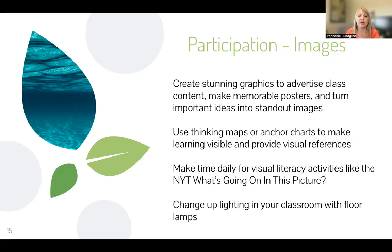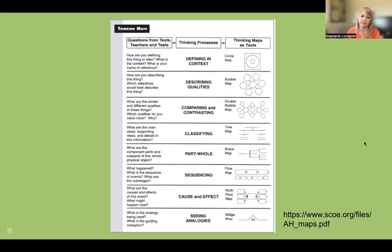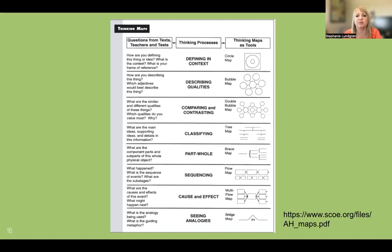We might also use something like thinking maps or anchor charts to make learning visible and provide visual references. Thinking maps are basically like a graphic organizer to help us organize thoughts or maybe even details about things we're reading. They help us get it out of our heads and write it down — for a lot of kids, this is a great way to study for a test, but sometimes it's just important to write it down in this kind of way to disseminate all we're learning on a topic. You might have a parts-and-whole map when we break down a topic, a sequencing map for a book or novel, or a bubble map for vocabulary where one word is in the middle and words that describe it are around the outside. There's a link on this slide if you want more ideas from this source.